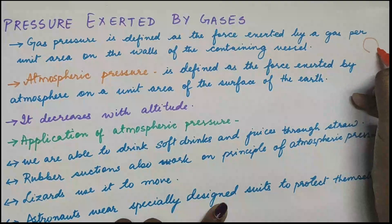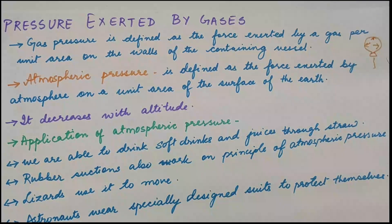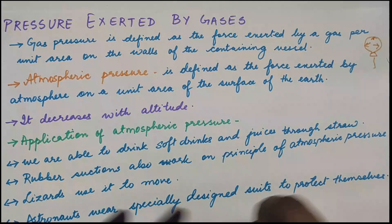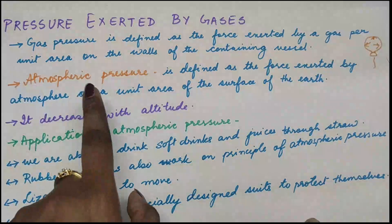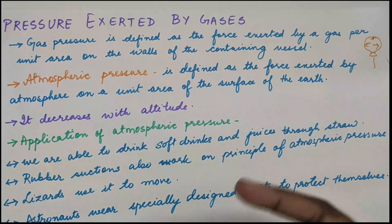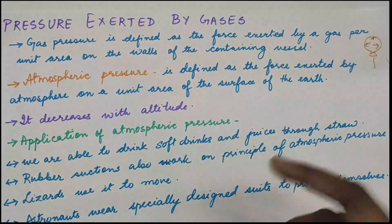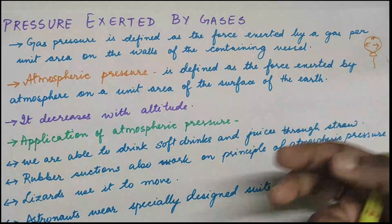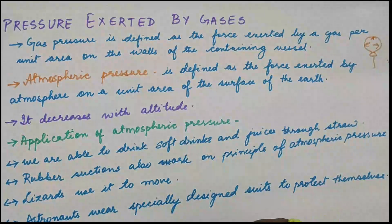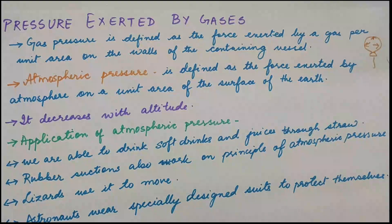Suppose this is a balloon with air inside it — it is exerting pressure on all sides of the balloon's wall. That is gas pressure. The same kind of pressure is felt by each one of us as atmospheric pressure. The atmosphere is a gaseous envelope surrounding the Earth, extending up to about 300 kilometers from sea level. Due to the gravitational pull of the Earth, air is denser towards the surface.